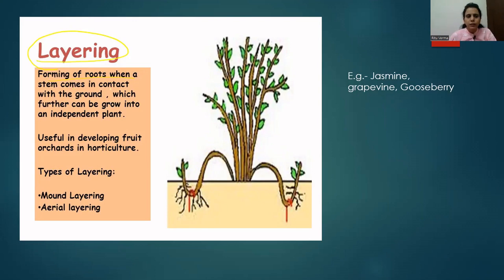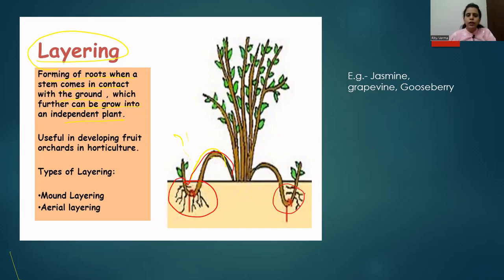The next method is layering. What happens in layering is there is formation of roots where a stem comes in contact with the ground, which can further be grown into an independent plant. From the plant, one of the stems is lowered and put into the soil. A part of the stem is placed under the soil and slowly, after a few days, new adventitious roots grow from that part of the stem inside the soil.